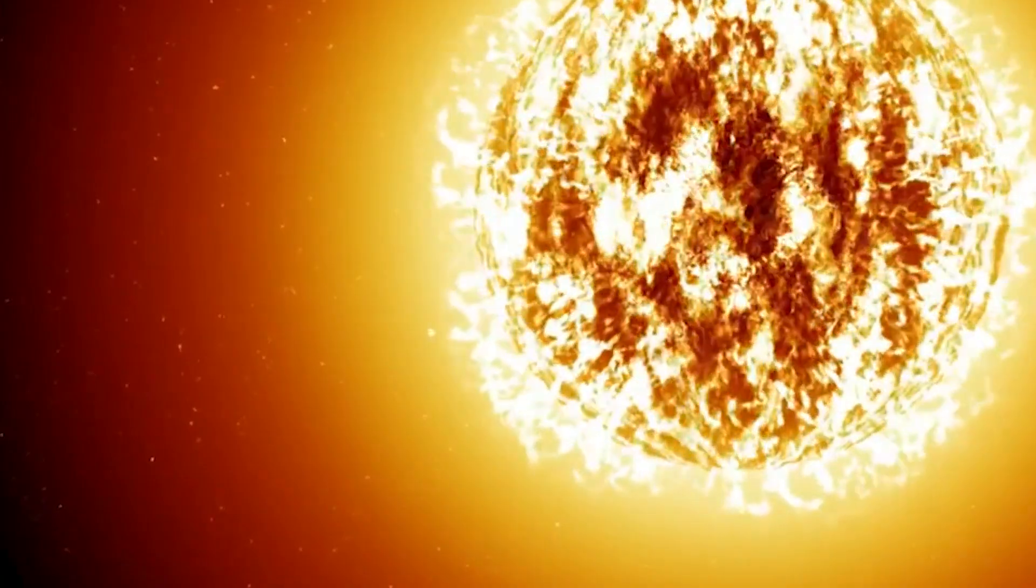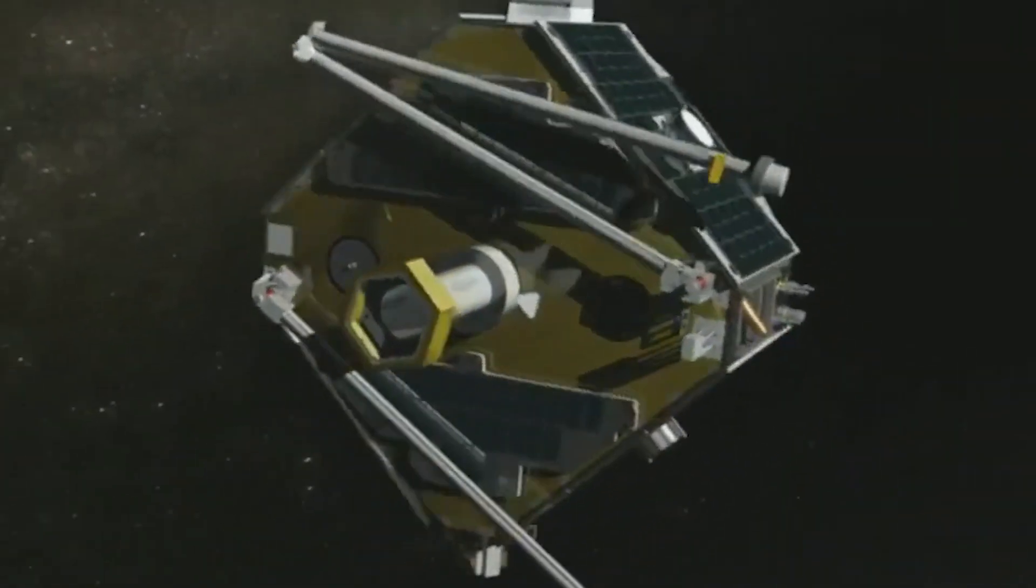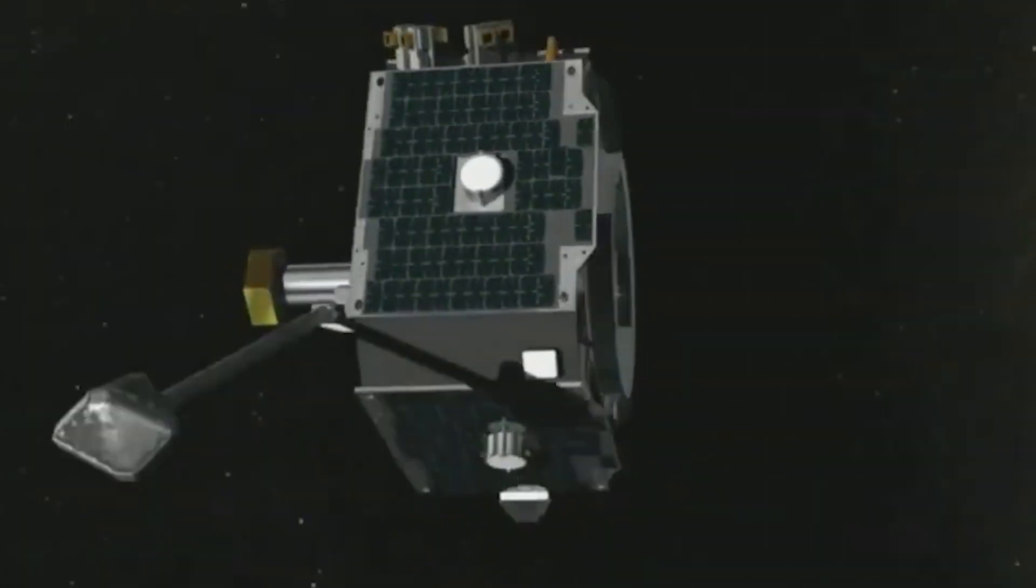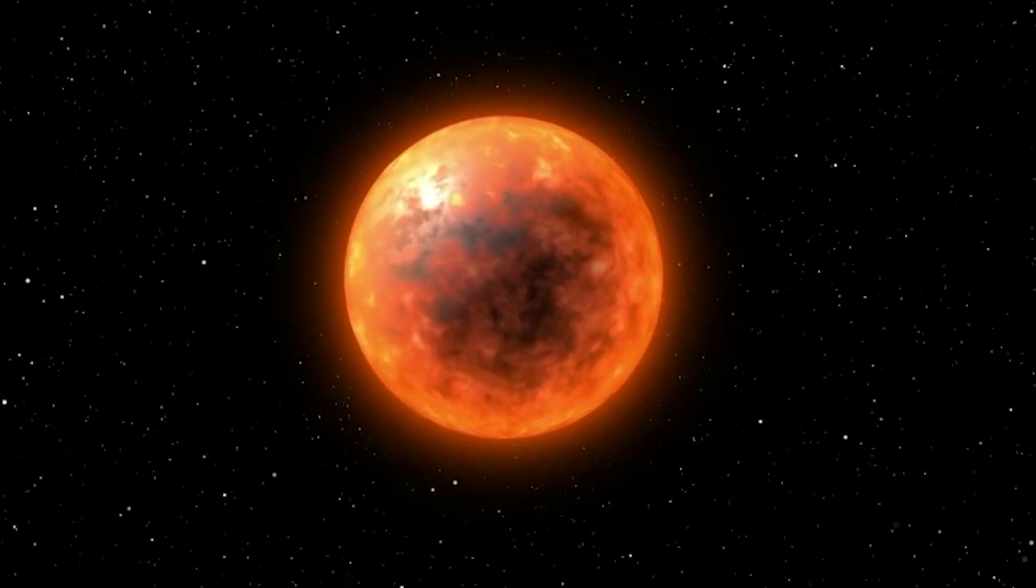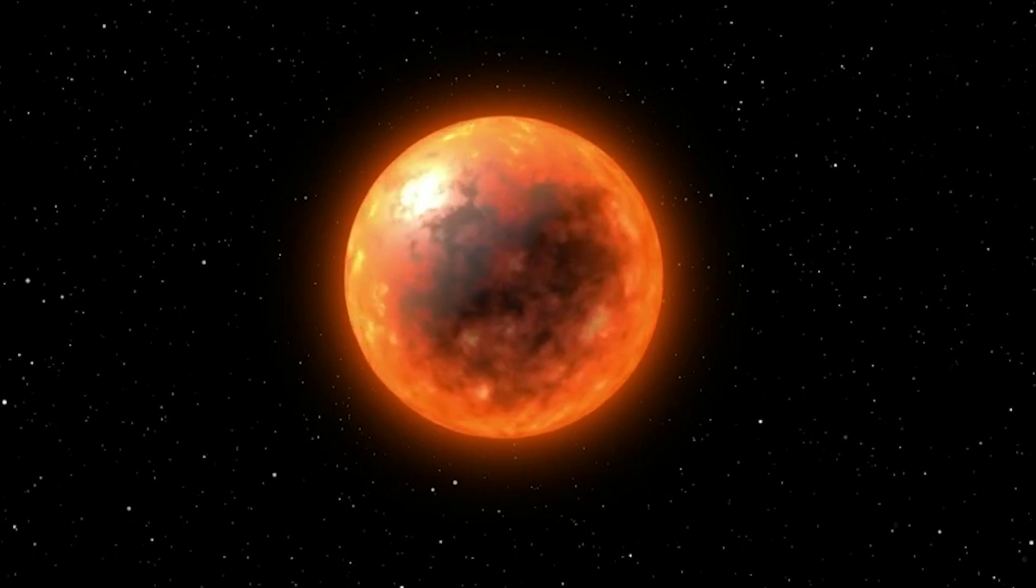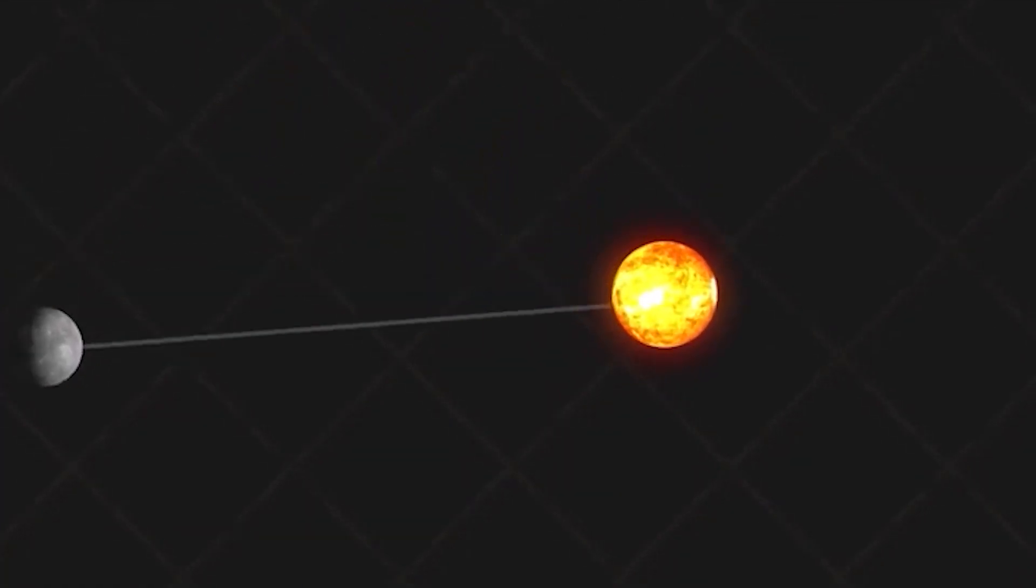About two-thirds of the world is illuminated at any given time as a result of the proximity of K2-141b's orbit to its star, which casts a blinding glare. Because one-third of the world is covered in darkness, the average surface temperature is a chilly minus 200 degrees Celsius.